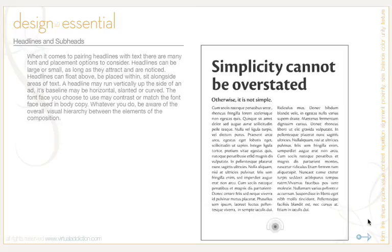When it comes to pairing headlines with text, there are many font and placement options to consider. Headlines can be large or small as long as they attract and are noticed. Headlines can float above, be placed within, or sit alongside areas of text. A headline may run vertically up the side of an ad. Its baseline may be horizontal, slanted, or curved. The font face you choose may contrast or match the font face used in the body copy. Whatever you do, be aware of the overall visual hierarchy between the elements of the composition.